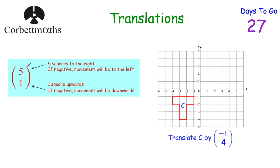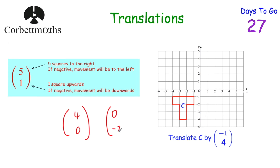If either number is zero you don't move in that direction. For instance, (4, 0) means translate four squares to the right only. And (0, -2) means don't move left or right, just move two squares down.